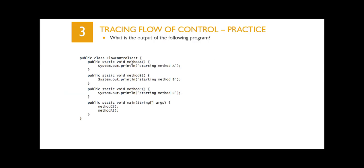Let's look at flow of control in another example. The main of the class is FlowOfControlTest, and when the program starts executing it looks for main — the compiler knows to put main first. The first statement in main calls method C, so we find method C, and it outputs 'printing method C.' It returns, and then the next statement calls method A, which outputs 'starting method A.' So C will output first, then A.